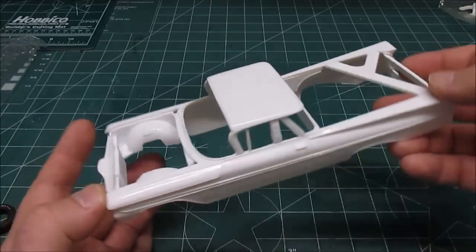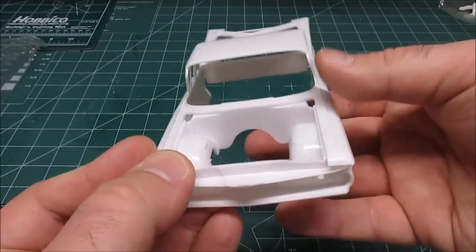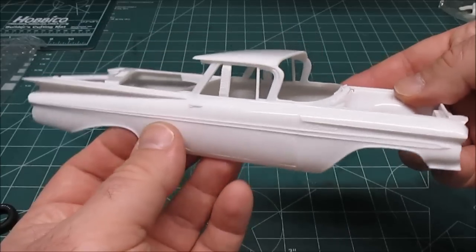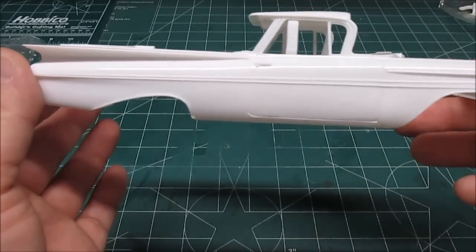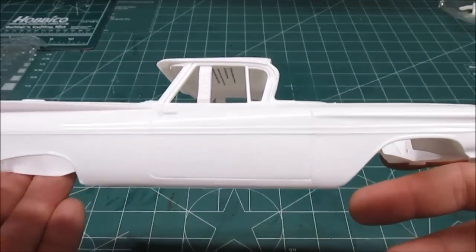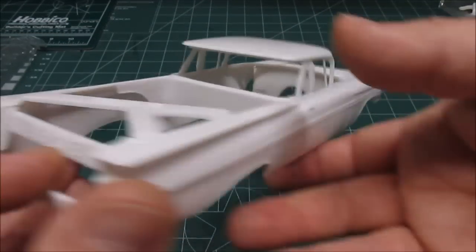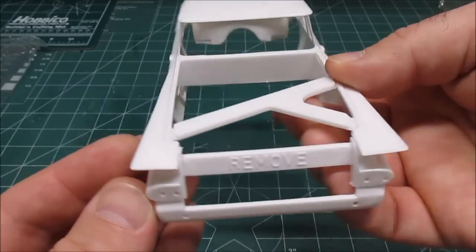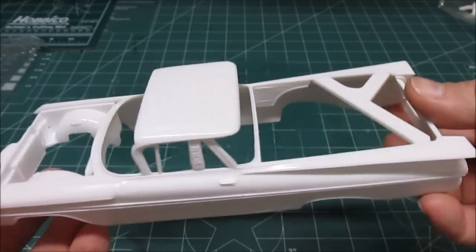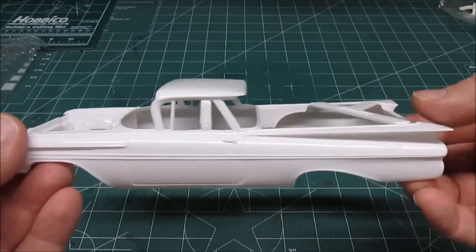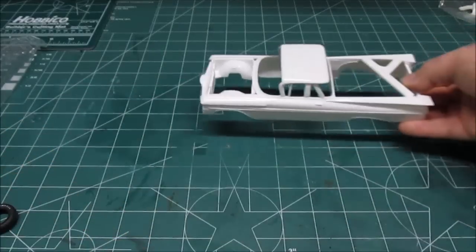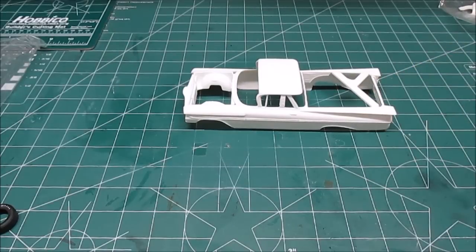And then that El Camino body. I love El Caminos, I think they're so cool. Is it a pickup, is it a car? It's both! You've got the comfort of a car, the haul ability of a pickup. I love those sweeping fenders. The doors are cut out correctly. And of course you'll be removing those cross braces, but leave them on there while you're painting and working so that the body stays perfectly straight. But that's a sharp looking machine there. And of course in 1/25th scale the El Camino is a pretty big car.